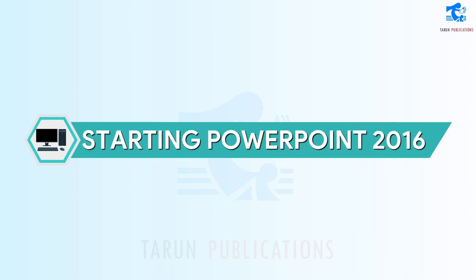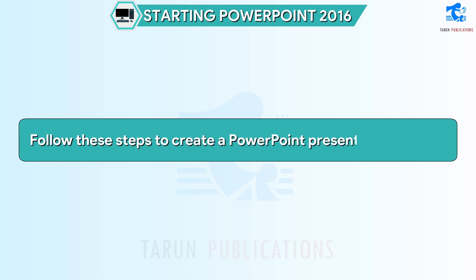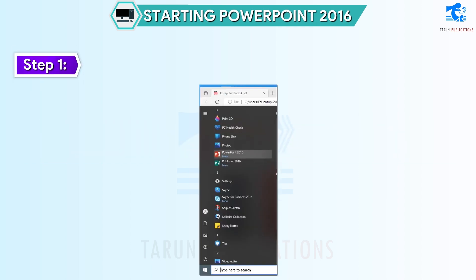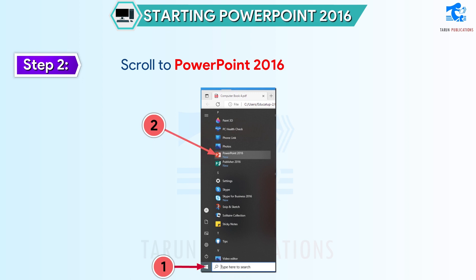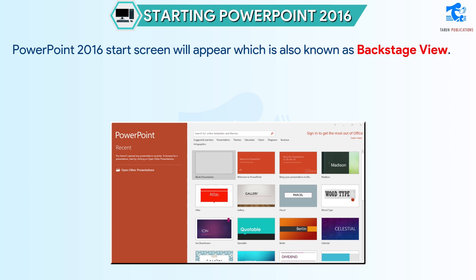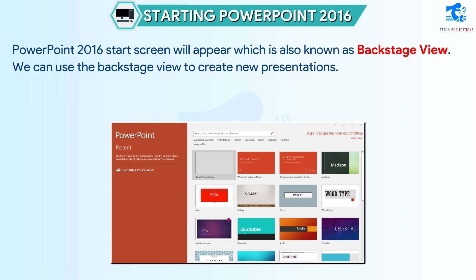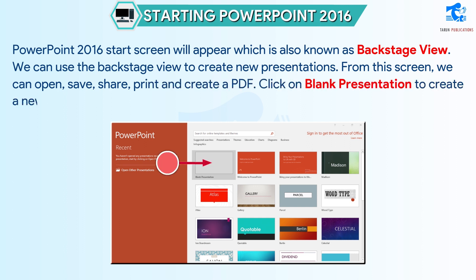Starting PowerPoint 2016. Follow these steps to create a PowerPoint presentation. Step 1: Press on the Start button. Step 2: Scroll to PowerPoint 2016 and click on it. The PowerPoint 2016 Start Screen will appear, which is also known as Backstage View. We can use the Backstage View to create new presentations. From this screen, we can open, save, share, print, and create a PDF. Click on Blank Presentation to create a new presentation.